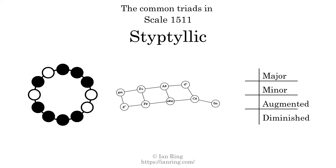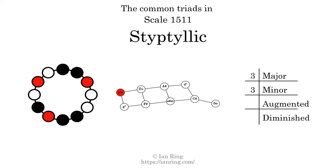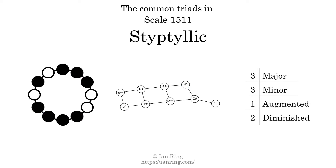Here are the common triads present in this scale. The diagram in the center is a graph of parsimonious voice leading between triads. There are three major triads, three minor triads, one augmented triad, and two diminished triads. Here is a Hamiltonian path of parsimonious voice leading that uses all the triads.